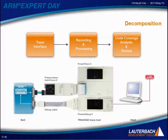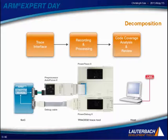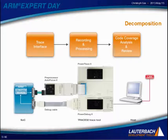Let's have another look at our setup. In general, if we look at it from a functional point of view, we have three main building blocks. We have the trace interface that determines which kind of data is available for analysis. Then we have the recording and processing. And on the right side we have the code coverage analysis and the review. The review is done on our host PC, which has an instance of Trace32 running, which controls the code coverage analysis and can be used to review the results. I will discuss these three parts in the next sections of my presentation.